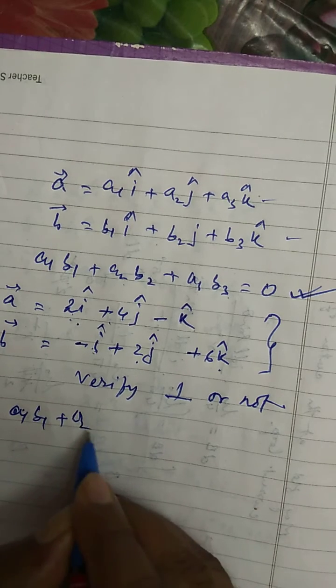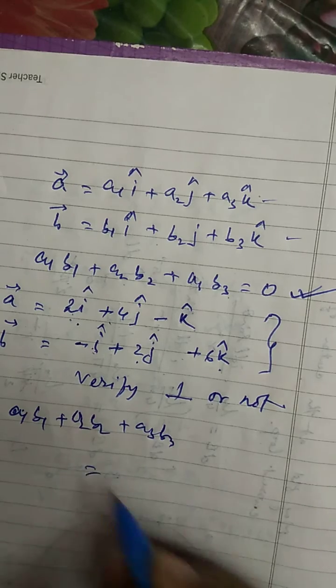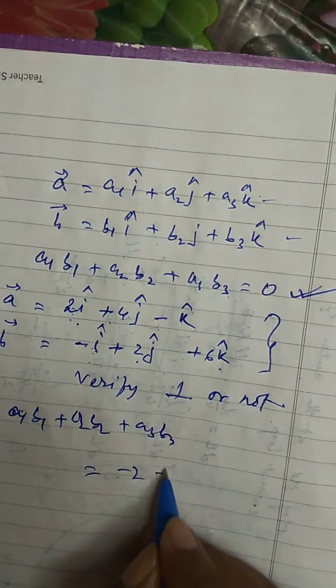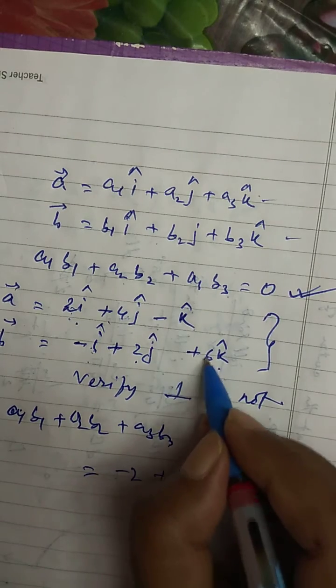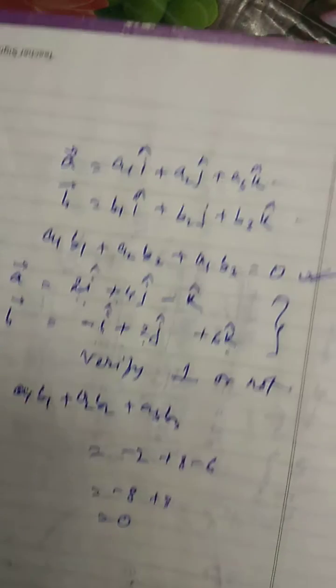a1b1 plus a2b2 plus a3b3 equals 2 into minus 1, which is minus 2; 4 into 2, which is plus 8; and minus 1 into 6, which is minus 6. So, minus 2 plus 8 minus 6 equals 0.